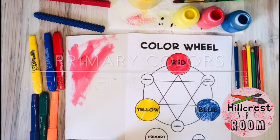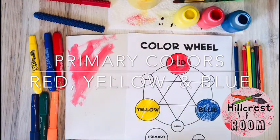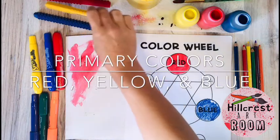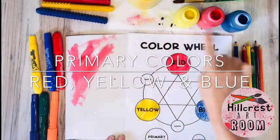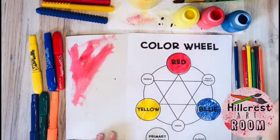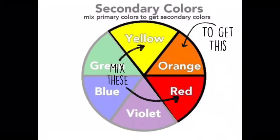So red, yellow, and blue, these are our three primary colors. These colors are what create all the other colors in the rainbow. If you have these three colors at home, you'll be able to make tons more colors.